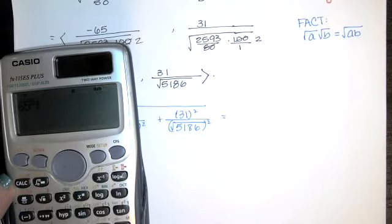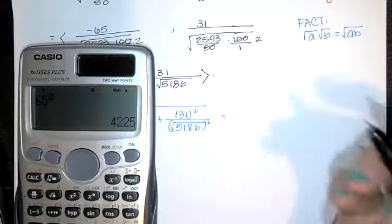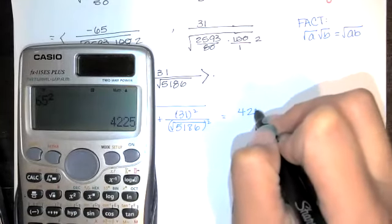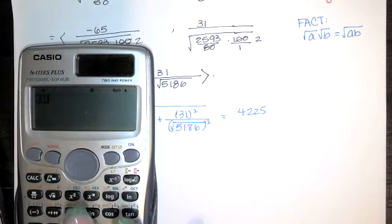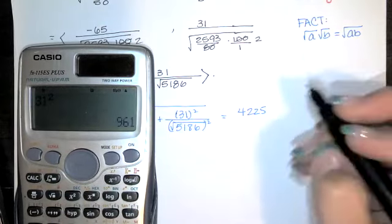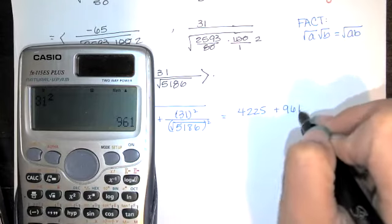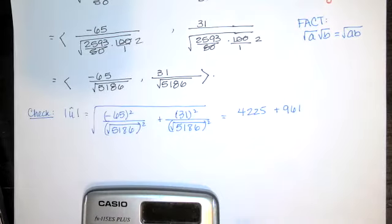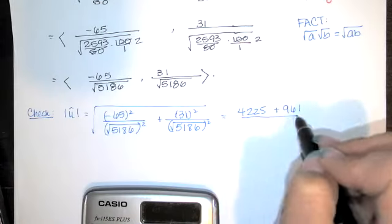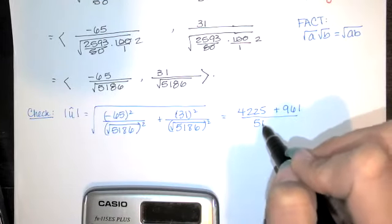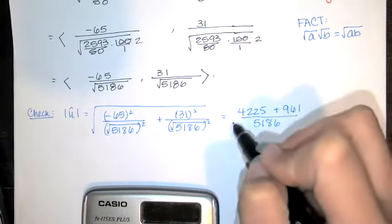65 squared, which is the same as negative 65 squared, is 4225. 31 squared is 961. Both of these guys have the same denominator. You take the square root of something and then you square it, those two operations undo each other. You get 5186.